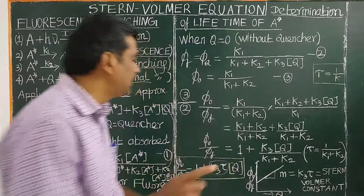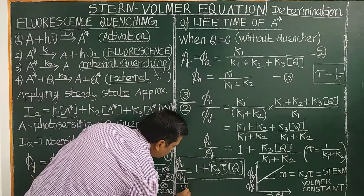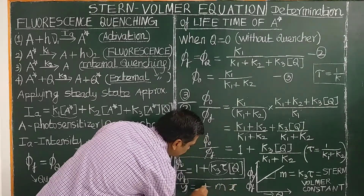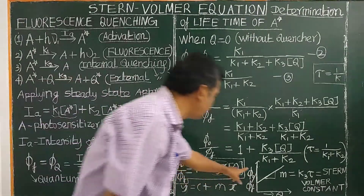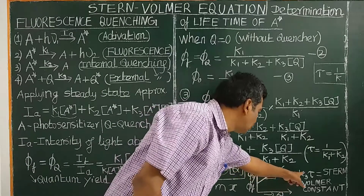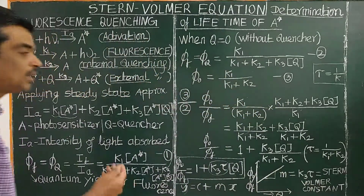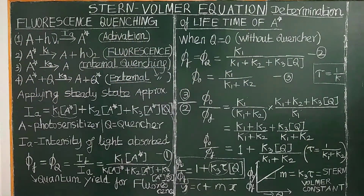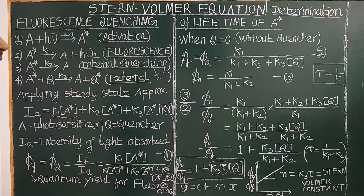This is a straight line equation of the form Y = mX + c. A plot of φ_0/φ_Q versus concentration of quencher will give a straight line with slope m = K3·τ. K3·τ is called the Stern-Walmer constant. From the slope, we can determine the lifetime of the excited species. I have solved a problem asked in GATE using this Stern-Walmer equation. Please understand. Thank you for watching.